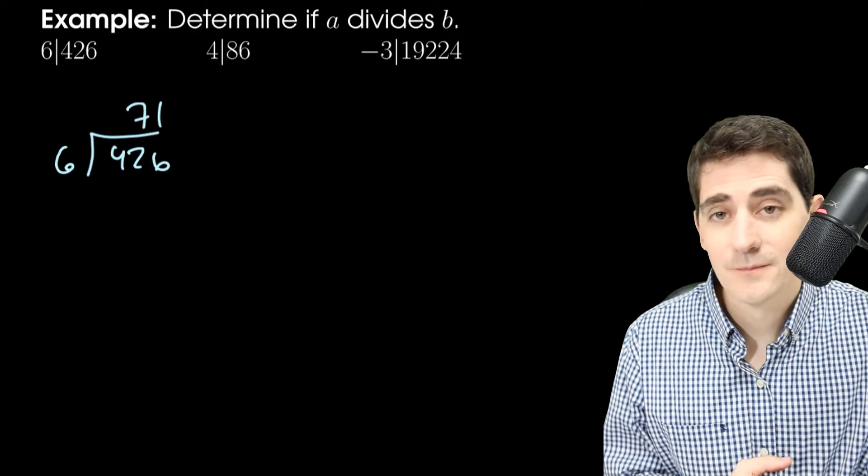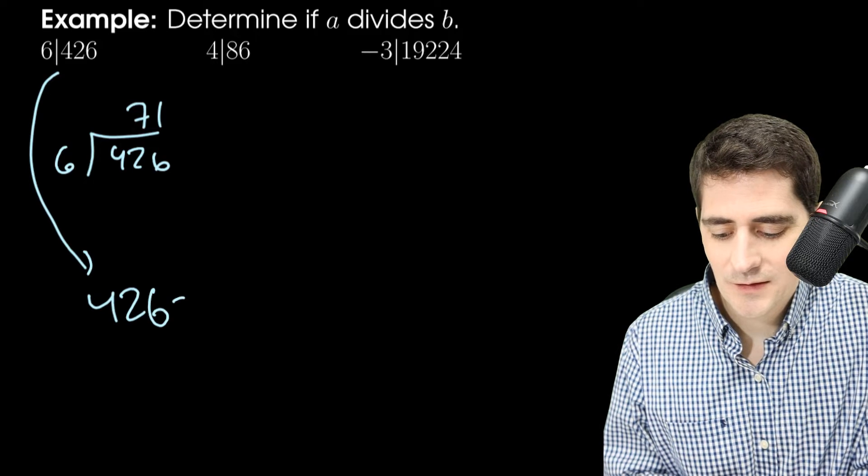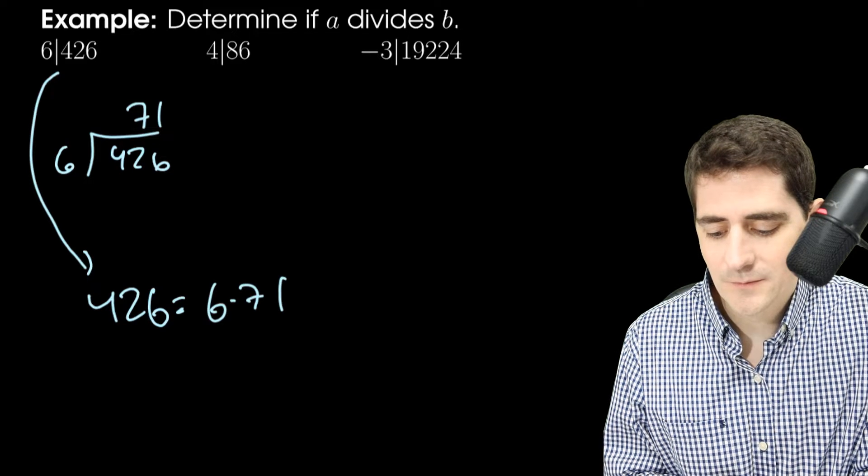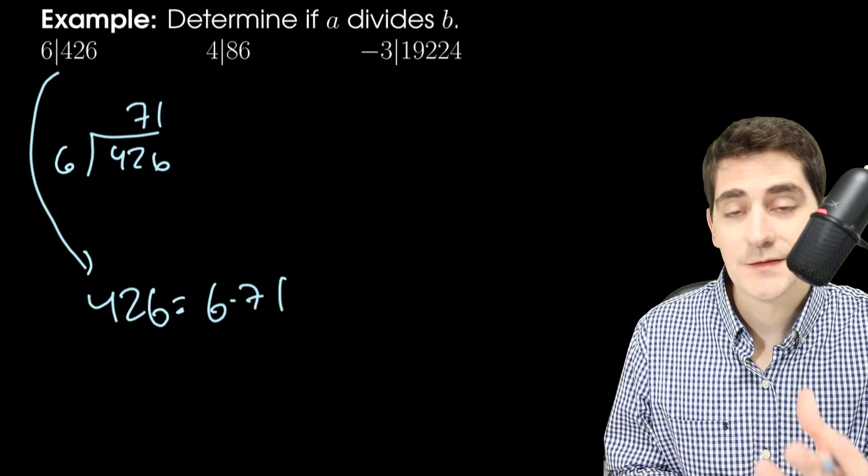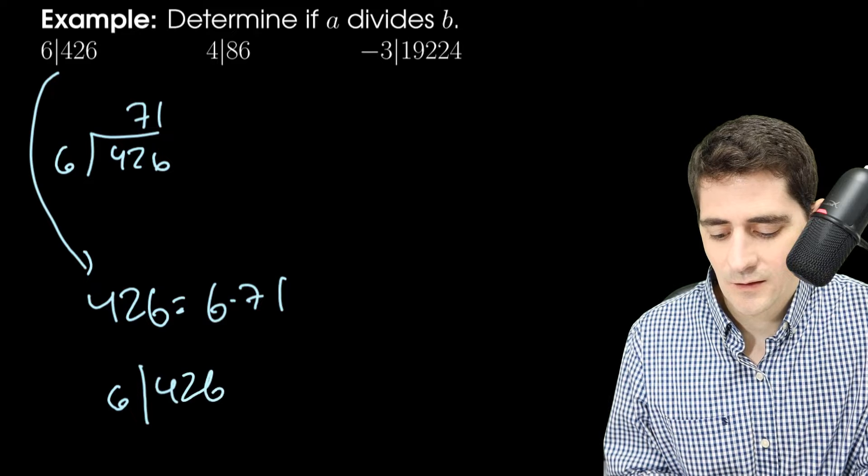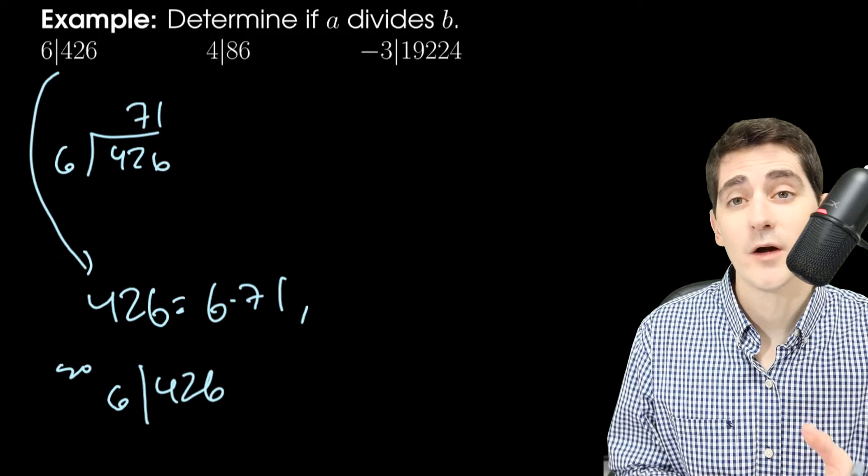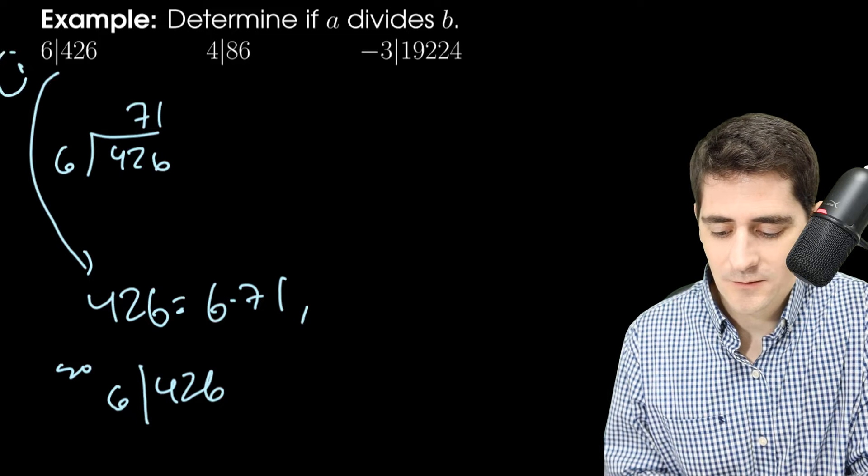If I try to divide 6 into 426, I get 71. So that means here that 426 is 6 times 71. So does 6 divide 426? Yes. Let me say 6 does. I'll say so. 6 does divide 426. I'll call that 1.